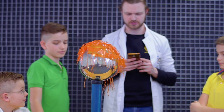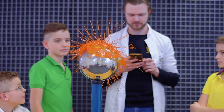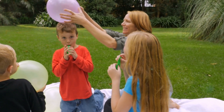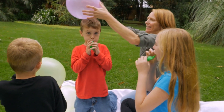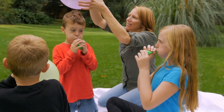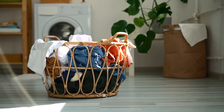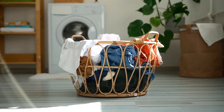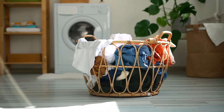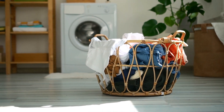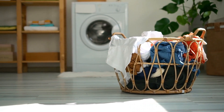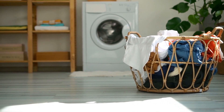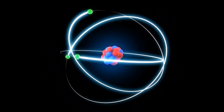Static electricity can be created by rubbing two different materials together, like when you rub a balloon on your hair, or it can occur naturally in certain materials. When you take off your clothes and put them in the laundry basket at night, they're covered with little bits of static electricity that make it feel like they're full of static cling. This is because your clothing has been rubbing against other clothes or carpeting during the day and collecting electrons from those materials.